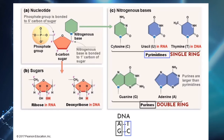Also, the sugar in DNA is different from the sugar in RNA. In DNA it is deoxyribose, and in RNA it is ribose. As you can see in the photo, ribose has oxygen in the bottom right, and deoxyribose doesn't have that oxygen. Therefore, DNA's full name is deoxyribose nucleic acid.